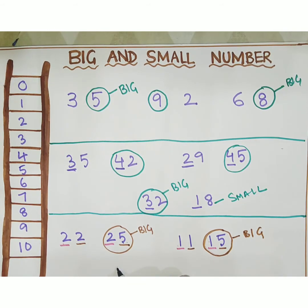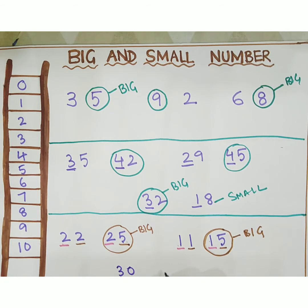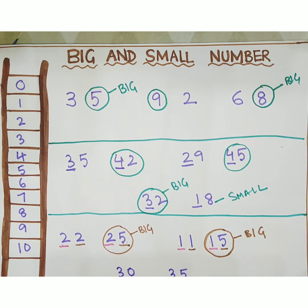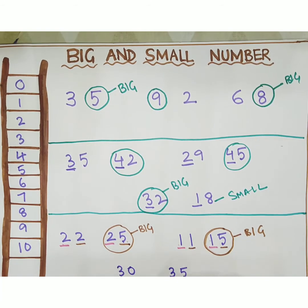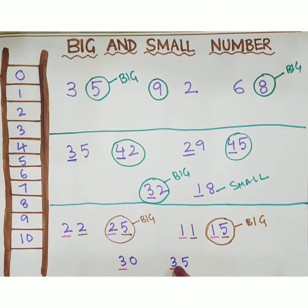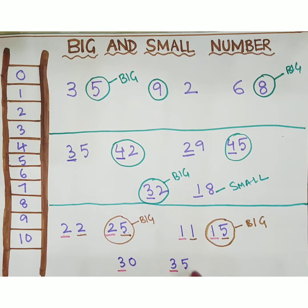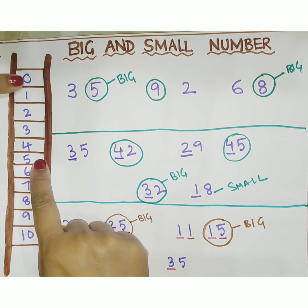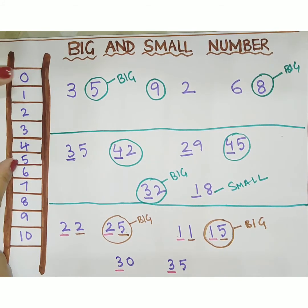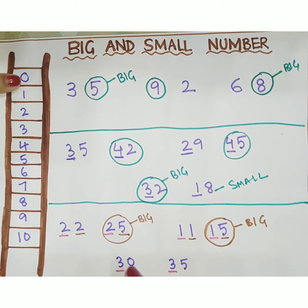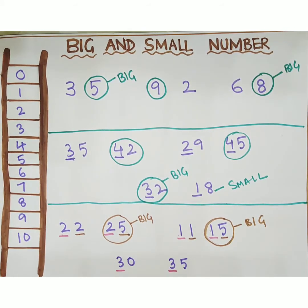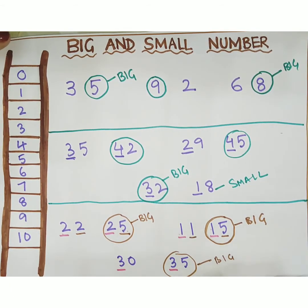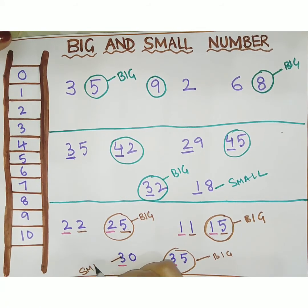If the numbers are 30 and 35, compare the first digits — both are the same. So we have to see the second digit. The second digits are 0 and 5. As we explained to the child, 0 is the smallest number. It means 30 is the small number and 35 is the big number.